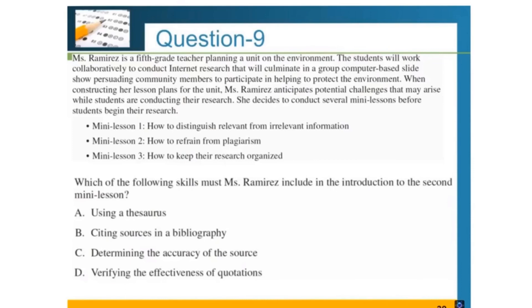This question is seeking an answer about mini lesson two, which is how to avoid plagiarism and how the teacher should approach it. In the introduction of mini lesson two, the answer is going to be the teacher should teach her students about how to do research online—that students need to show the info where they get it from. They need to cite the sources in a bibliography. The answer is going to be B.